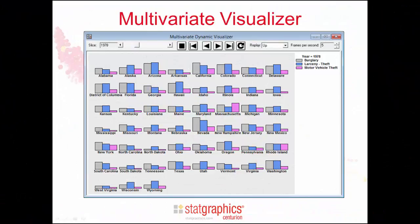The multivariate visualizer uses other types of graphs to show the values of multivariate time series. Here you see crime rates in 1978 in each of the 50 states in the District of Columbia. Again, users may use the controls on the statlet toolbar to see the plots change with changing year.